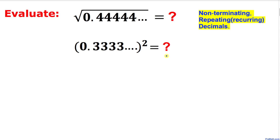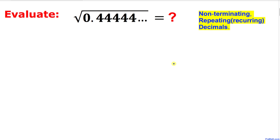Welcome to Pre-Math. In this video tutorial we are going to deal with repeating and non-terminating decimals, as you can see in these two questions. These numbers are non-ending and non-terminating — they go on and on, and moreover they are repeating themselves. In this very first question, we are going to take the square root of the decimal 0.444... going on and on.